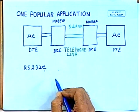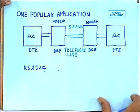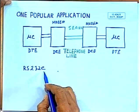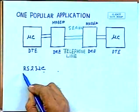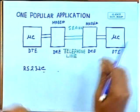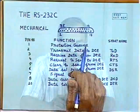RS-232C is widely used. Various input-output devices like printers, plotters, and other devices are also interfaced through RS-232C. Any standard has four important components: mechanical, electrical, functional, and procedural.